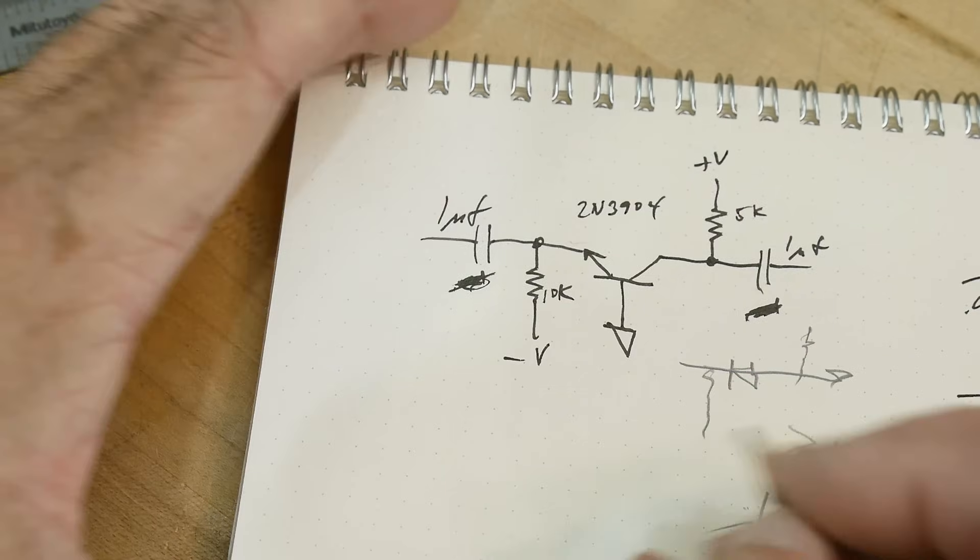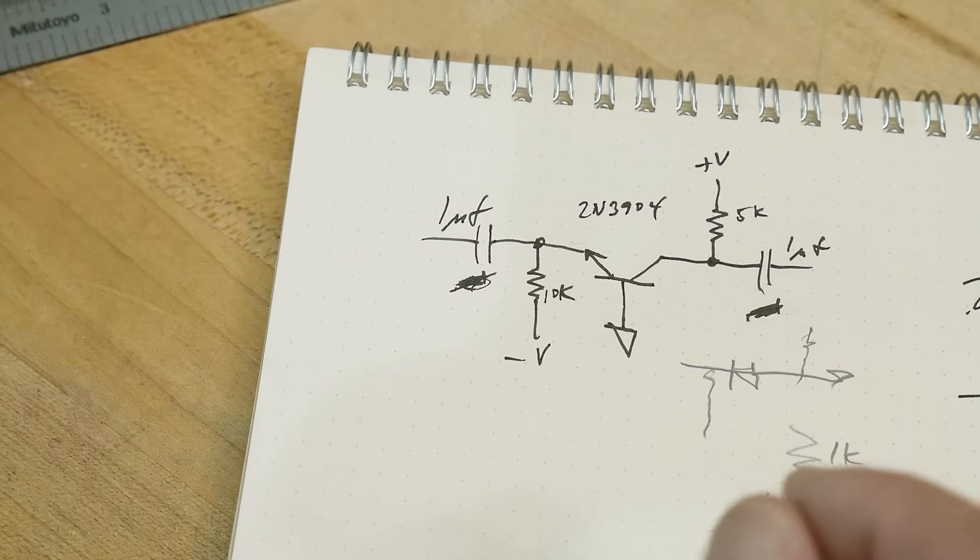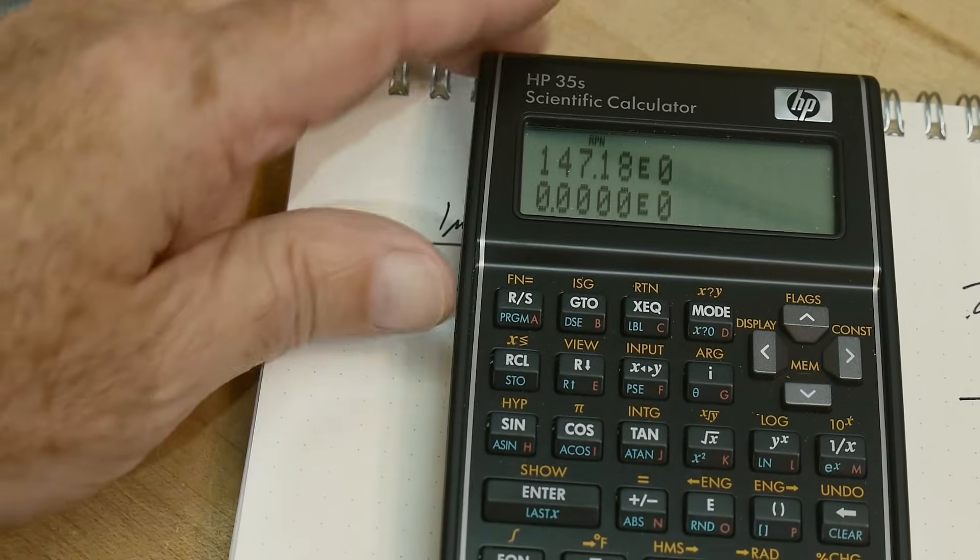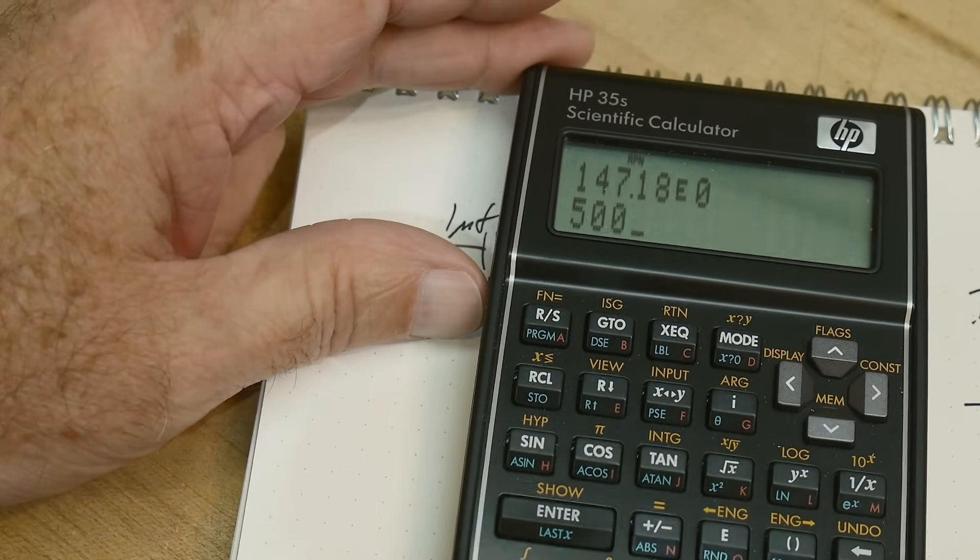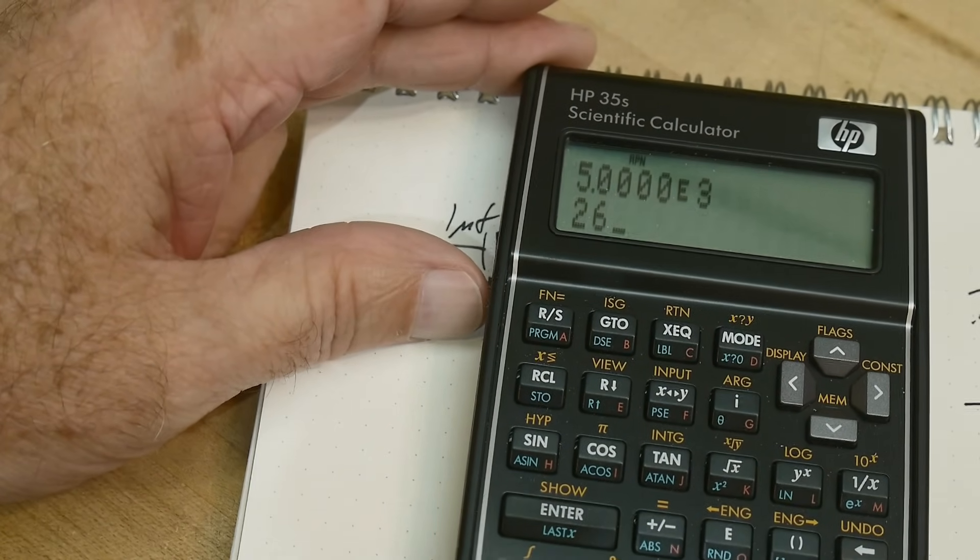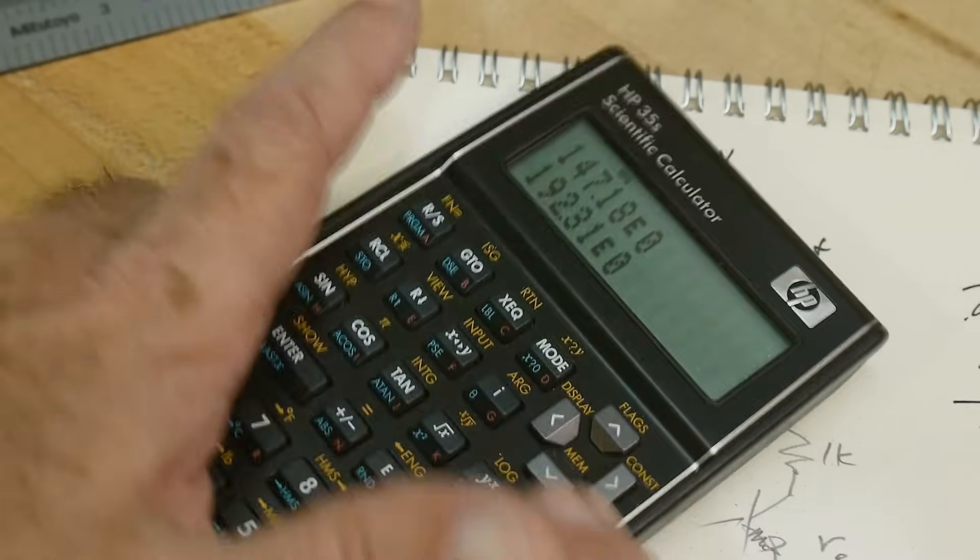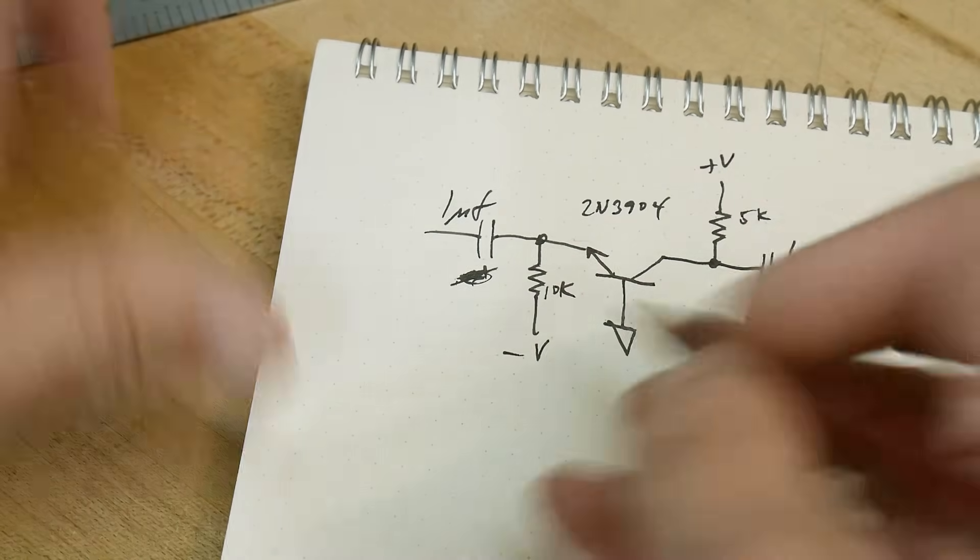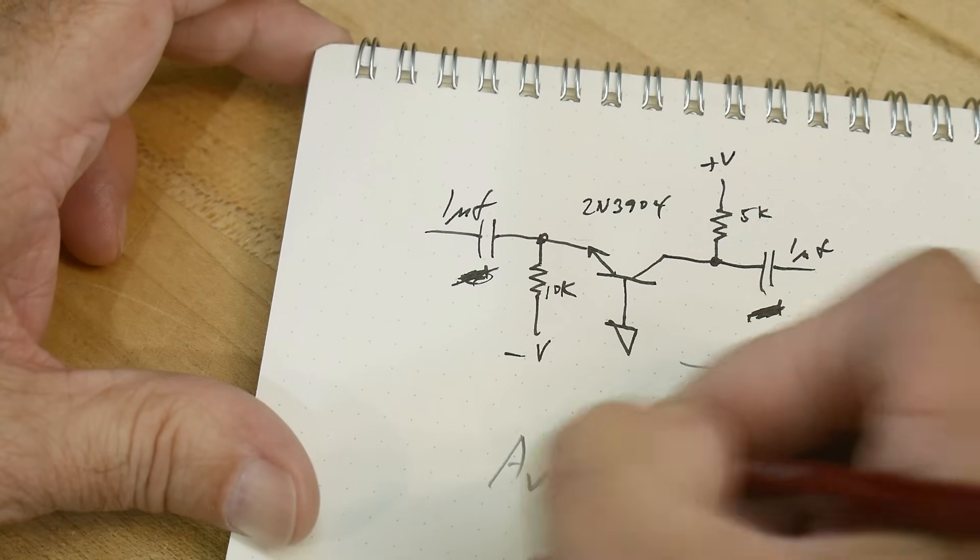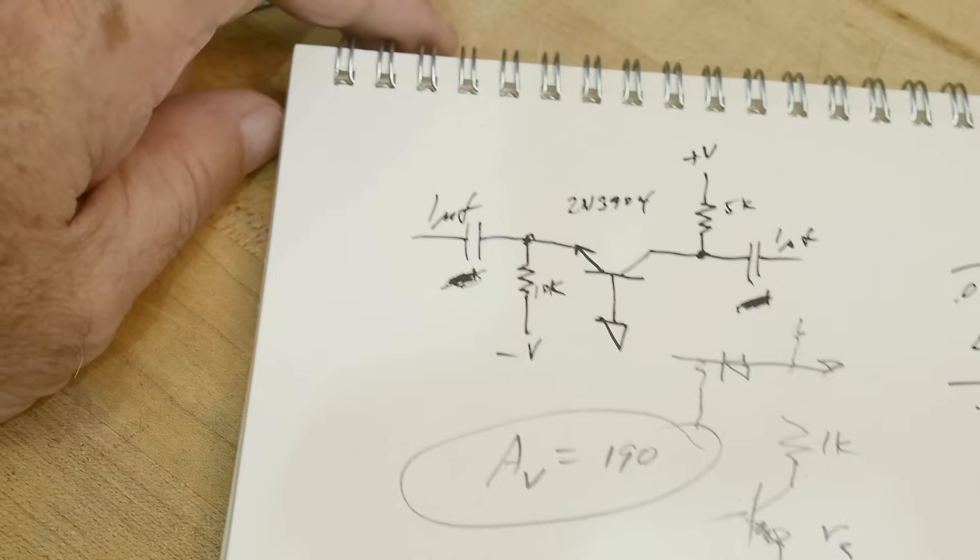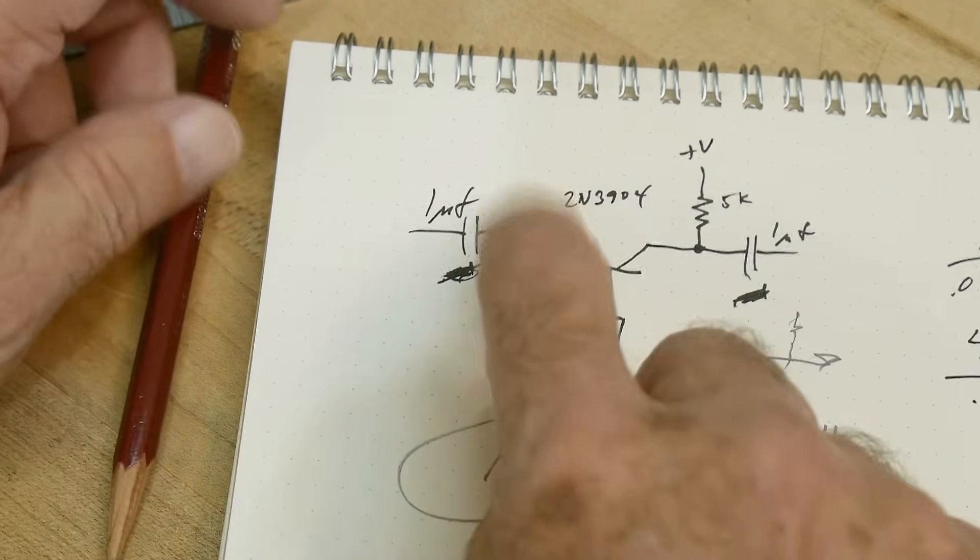If we have 5k and divide it by 26, we're going to get about 190. So we claim that the voltage gain is going to be 190 in my circuit here. Let's go measure it and see if it works.